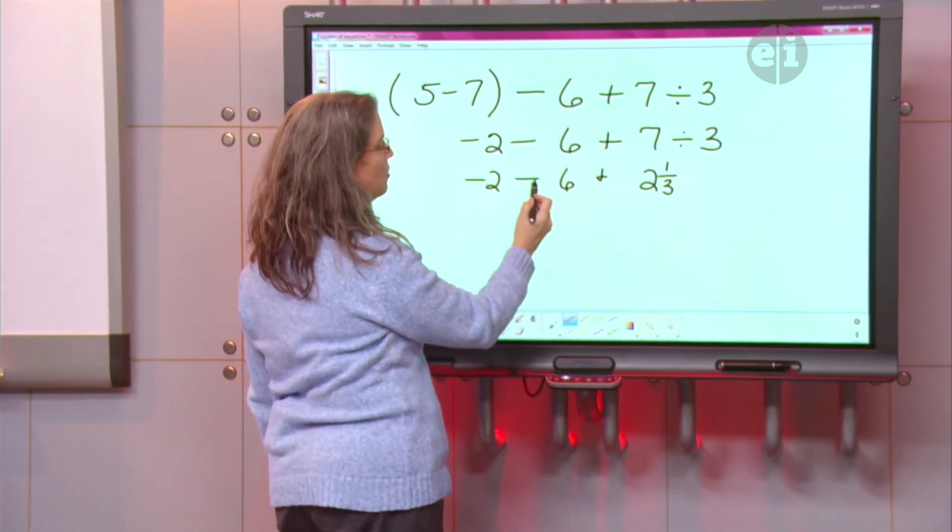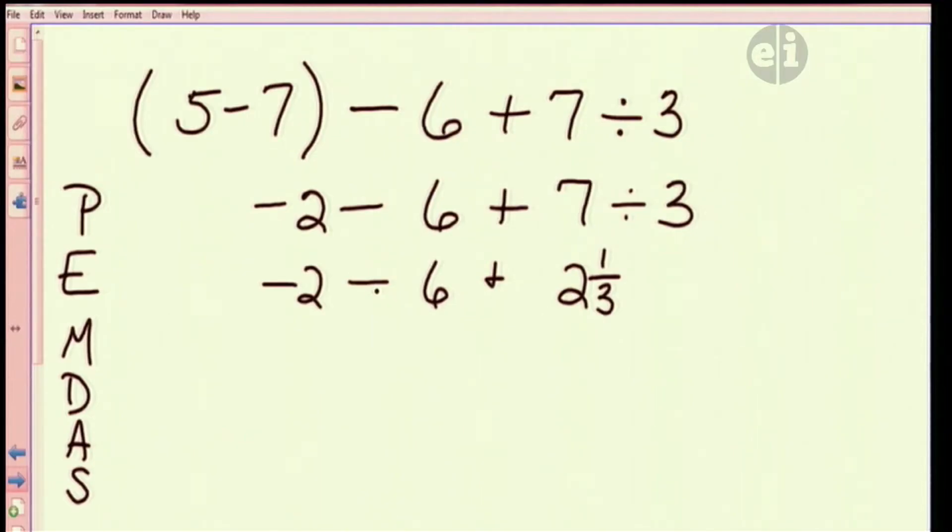So negative 2 take away 6. I would make my students actually rewrite it as negative 2 plus negative 6 plus the 2 and 1/3.